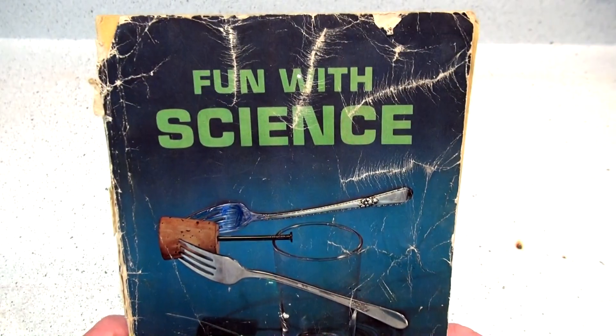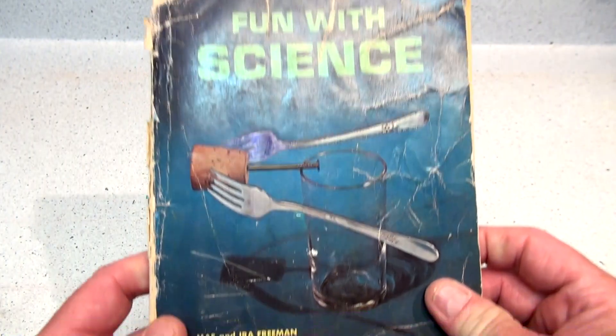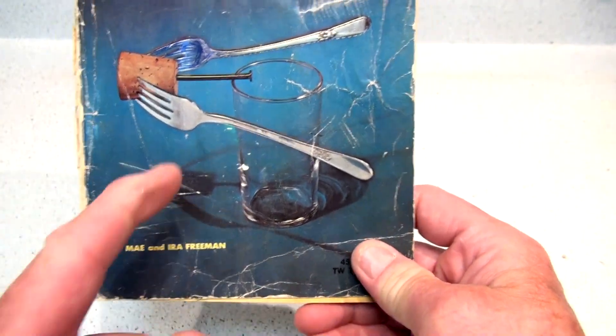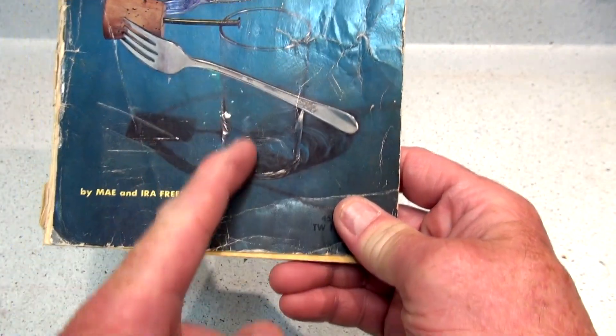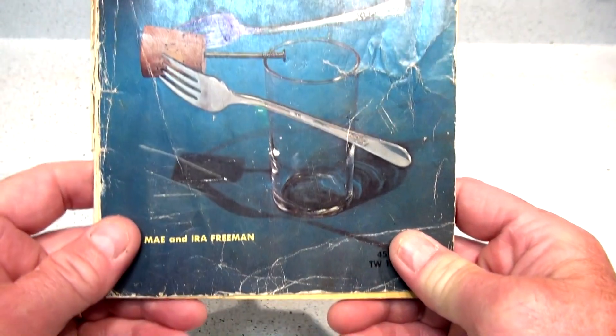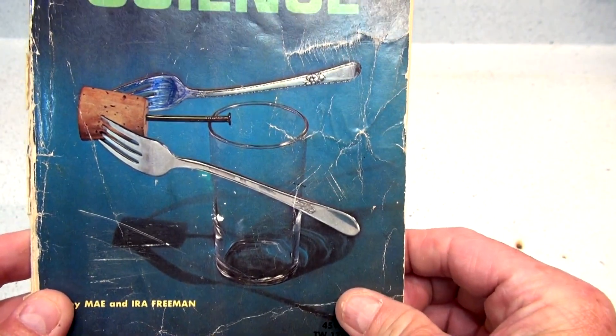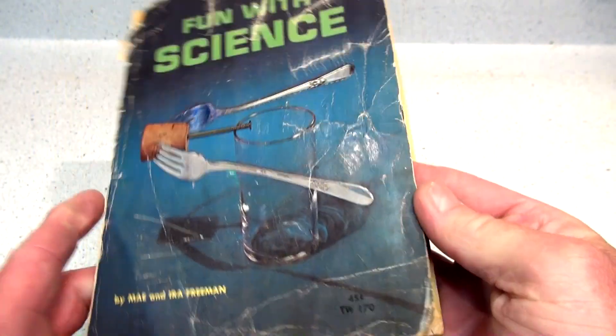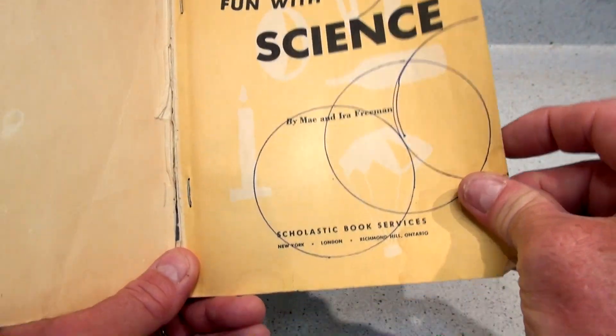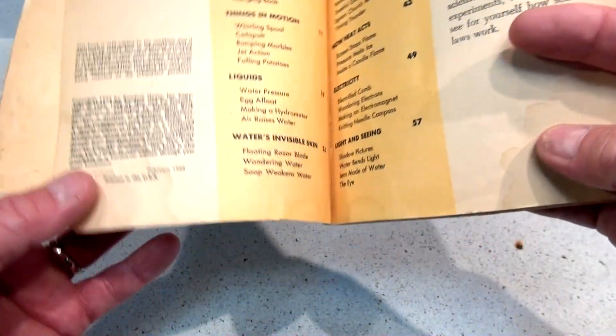Hi everybody, welcome back. I found this book the other day while cleaning up. It's called Fun with Science. The first thing I noticed on the front was a picture of a glass with a nail, two forks, and a cork, and somehow it's magically balanced. I said to myself, you know what, I'm gonna give that a try.